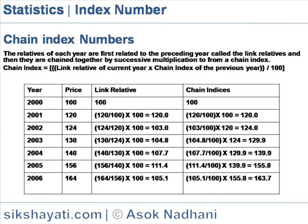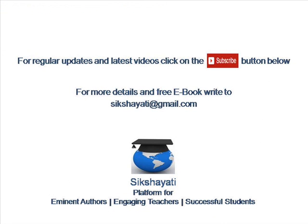The table shows the year and the respective price. The next column shows the link relative, with the first one taken as 100 and then computed in a chain relative to the previous one. The chain index column shows the computation from the base.